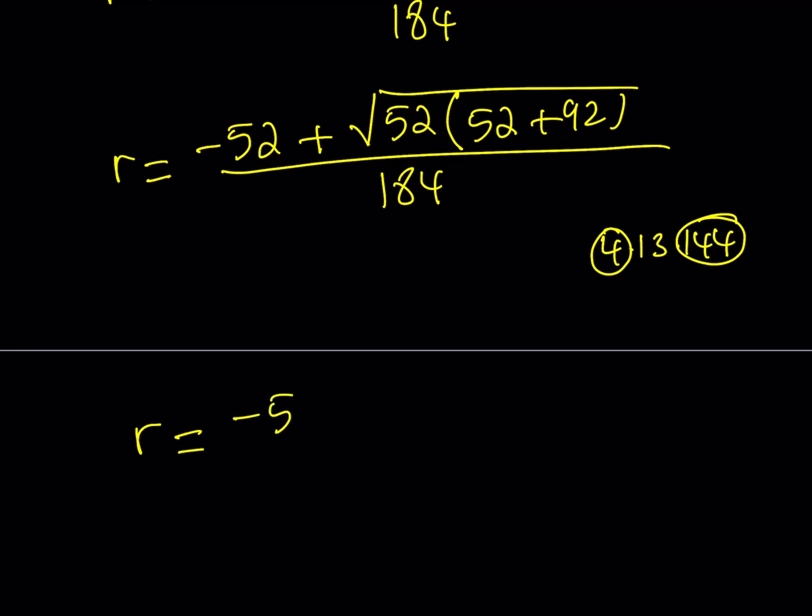So I'm getting this one then. Negative 52 plus 2 times 12, which is 24, times the square root of 13 only. Awesome. You see, we didn't have to calculate these large numbers. Divide by 184. Obviously, this can be simplified because everything here is divisible by 4. Beautiful.